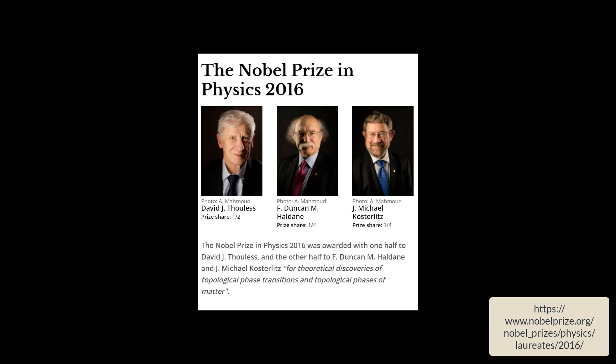The discovery of the KT transition in the 2D XY model was significant in that it was a new type of phase transition, a topological phase transition, that was different from the spontaneous symmetry breaking phase transitions that Mermin and Wagner showed to be impossible in a lattice model of dimension 2 or less at finite temperatures.